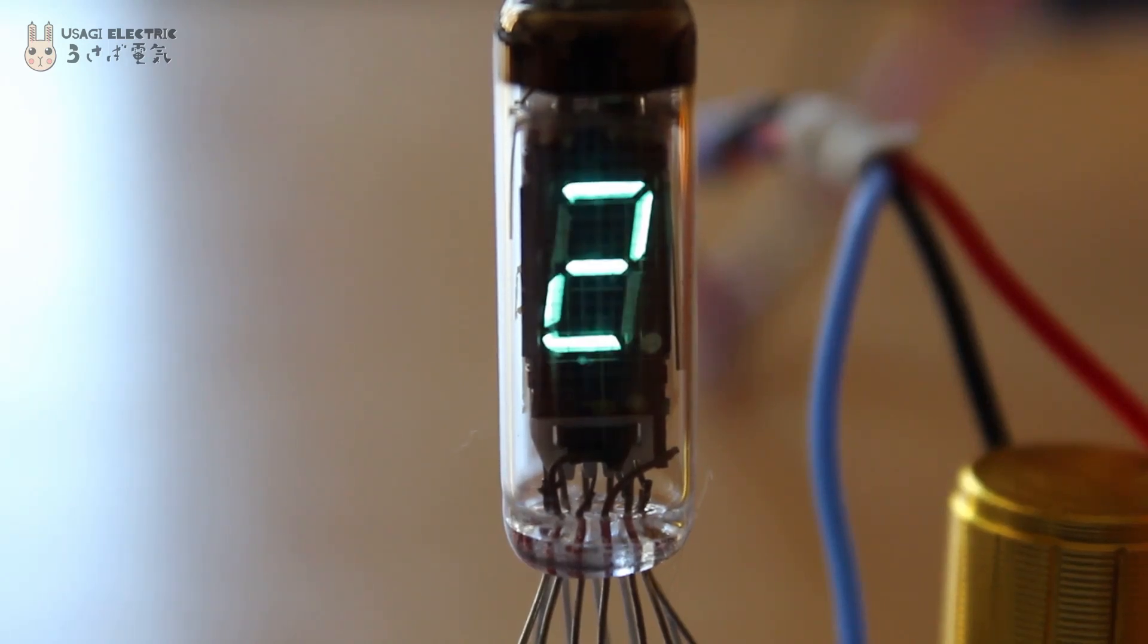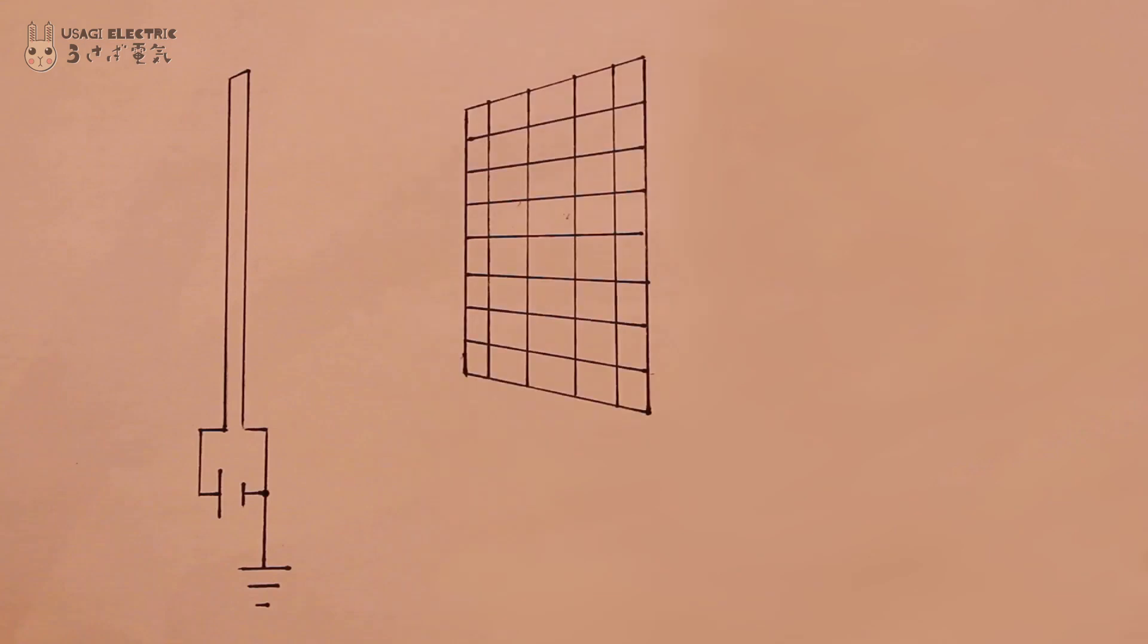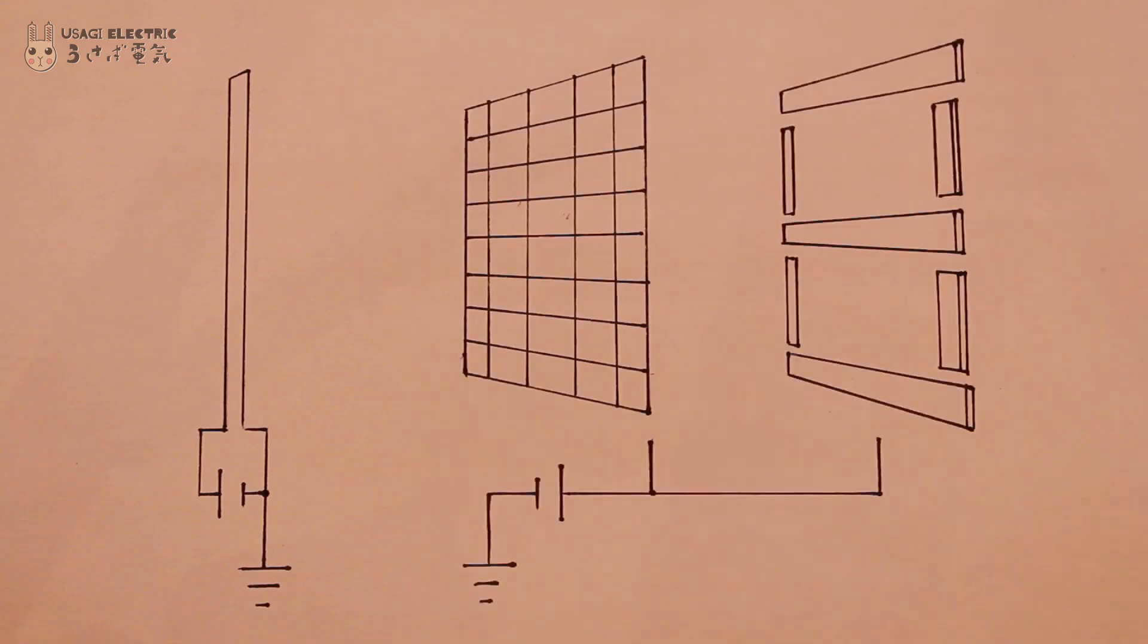Vacuum fluorescent displays are essentially highly specialized vacuum tube triodes. There's a filament cathode, a grid, and often multiple anodes coated in a special phosphor enclosed in a glass case pulled to a vacuum.